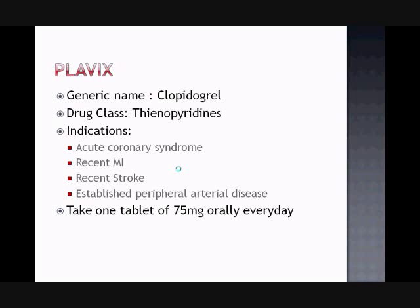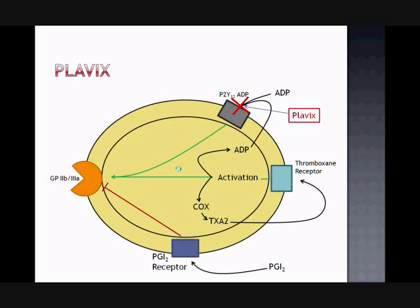Plavix is the brand name for clopidogrel, typically dosed as a 75 milligram tablet per day for the prevention of clotting such as in coronary and peripheral artery diseases, as well as for patients who recently suffered from a heart attack or stroke. Plavix is an antagonist of the P2Y12 ADP receptor found on platelets, preventing ADP itself from binding. As mentioned earlier, ADP mediates the activation of GP2B3A, and therefore platelet aggregation is inhibited when ADP cannot bind to the P2Y12 surface receptor.